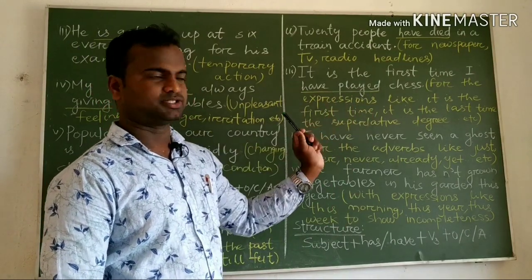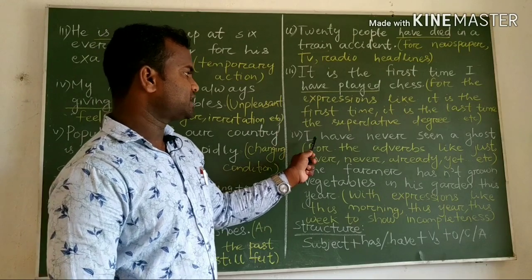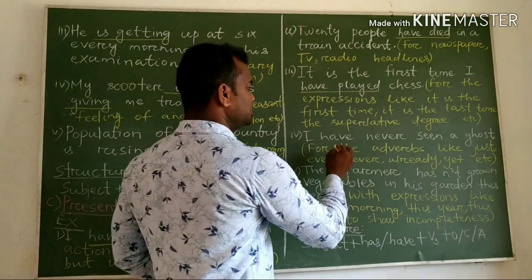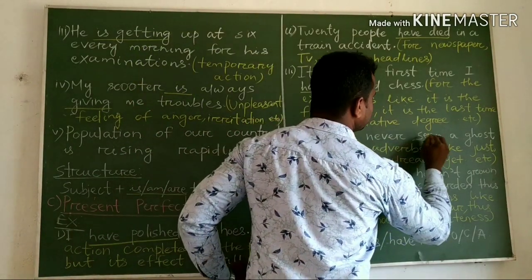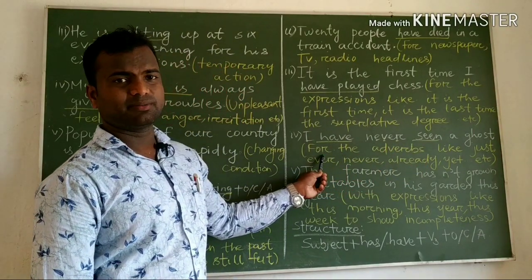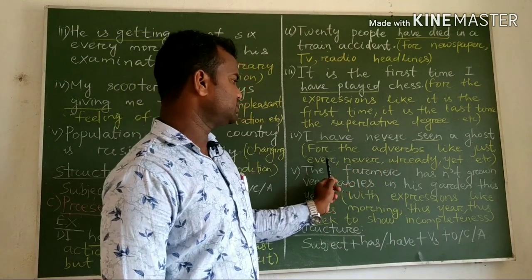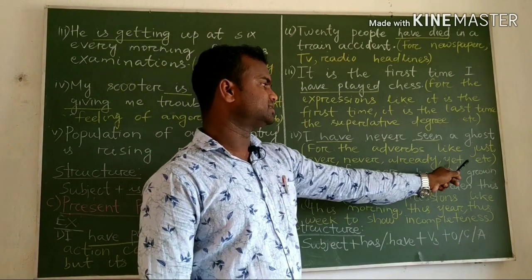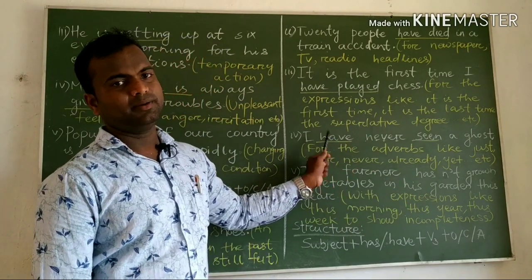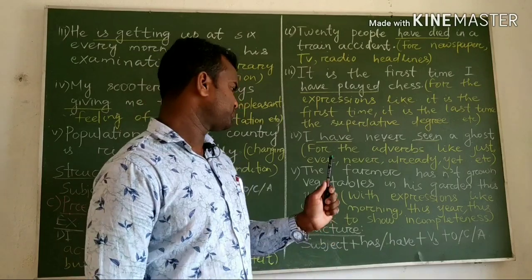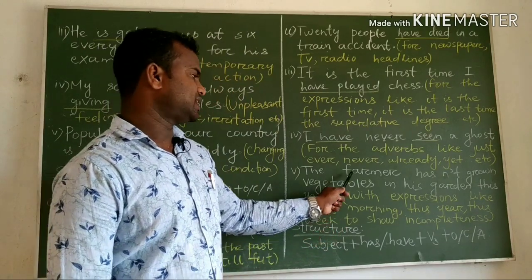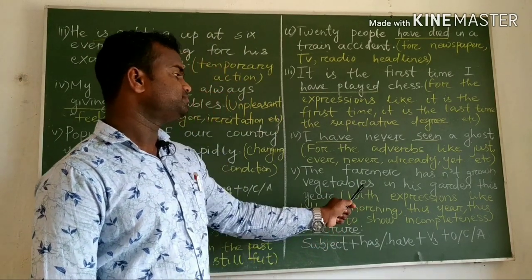Present perfect is used with adverbs like just, ever, never, already, yet, still. Example: I have never seen a ghost. Here 'never' is an adverb of frequency. We use present perfect with adverbs such as just, ever, never, already, yet, and still.